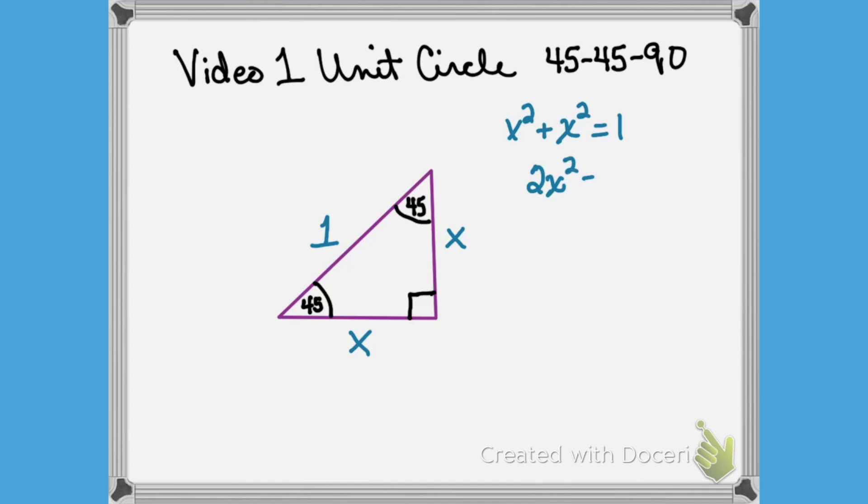I'm going to gather like terms, which gives 2x² = 1, then divide by two to get x² = 1/2, and take the square root of both sides.